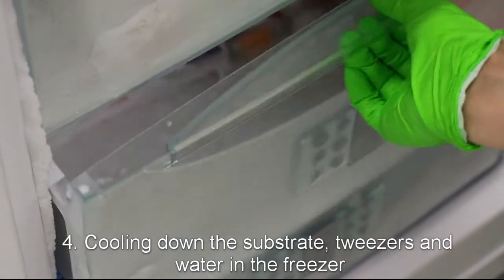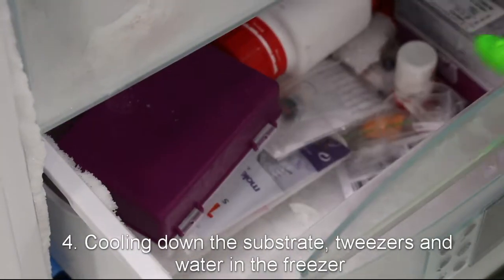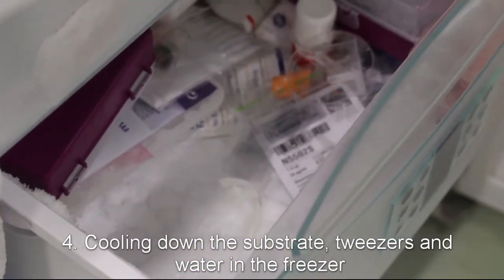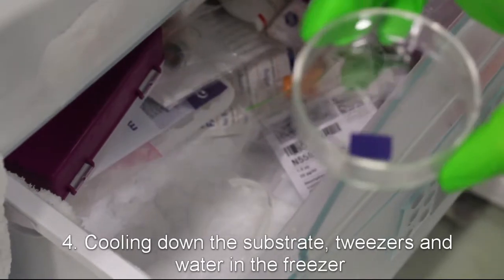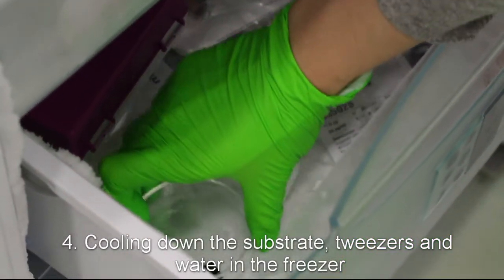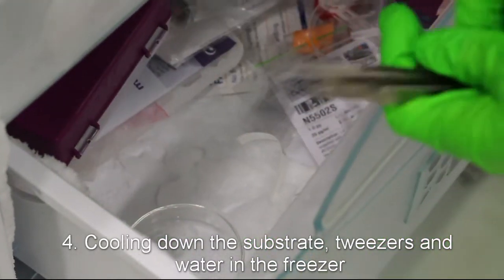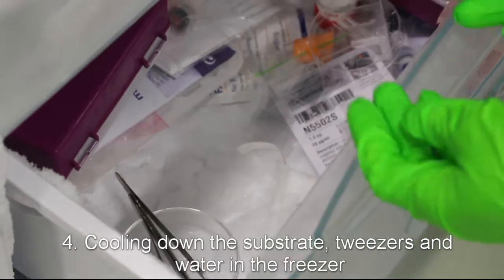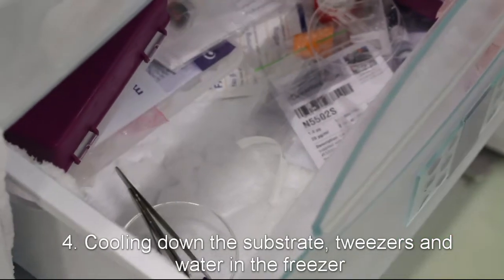Another important detail is that as soon as cyclohexane is solidified, it must be handled in cold to avoid melting. For that reason, while copper is still being etched, we put the tweezers, the target substrate in the petri dish and a beaker of water in the freezer. In such way, we make sure that they are colder than the cyclohexane.